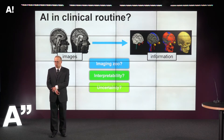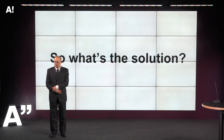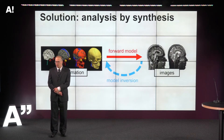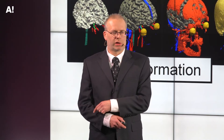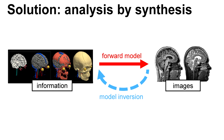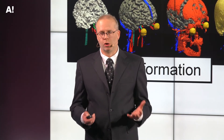So now I've listed all the problems — what are the solutions? The solution I've concentrated on in my research is so-called analysis by synthesis. We want to take images and analyze them, and the way we solve these problems is by turning the whole thing around. I start with some quantity of interest — let's say diagnosing Alzheimer's — then I learn how to model images of Alzheimer's patients, generating images randomly that look like Alzheimer's cases. When you do that, you can invert the model to get the answers, solving all three issues: the imaging zoo, uncertainty, and interpretability.